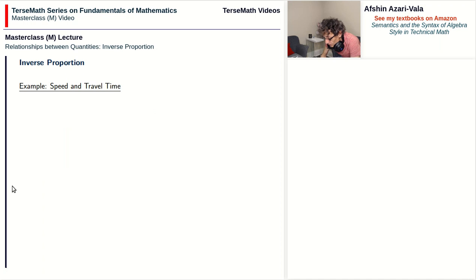As an example of an inverse proportion problem, suppose that I want to travel from Toronto to Montreal which has a fixed distance of about 506 kilometers. The equation for this problem is v equals 506 divided by t, where v is the speed of travel and t is the travel time.